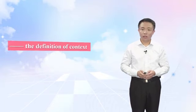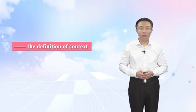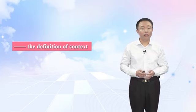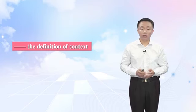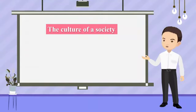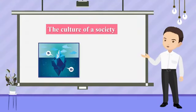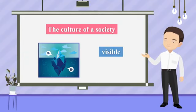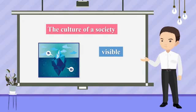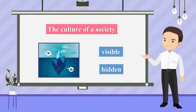Hall defines context as the information that surrounds an event. It is inextricably bound up with the meaning of the event. If the culture of the society was an iceberg, then there are some aspects visible above the water, but there is a larger portion hidden beneath the surface.